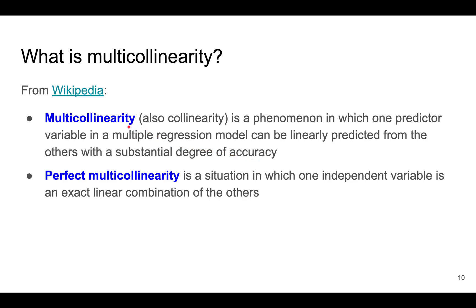For example, if one variable is predicted by two or three others, that would be an example. Perfect multicollinearity is a situation where one independent variable is exactly a linear combination of the others.